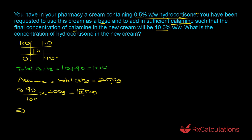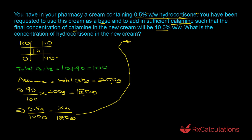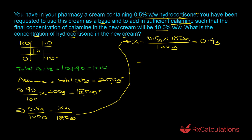Knowing we have 180 grams of base, we can determine how much hydrocortisone is present. Using the percentage concentration of 0.5%: 0.5 grams per 100 grams equals x grams per 180 grams. Solving: x equals 0.5 times 180 divided by 100, which equals 0.9 grams. This 0.9 grams is the amount of hydrocortisone present in the 180 grams — and it's also the same amount present in the total 200-gram preparation.